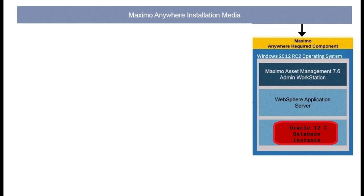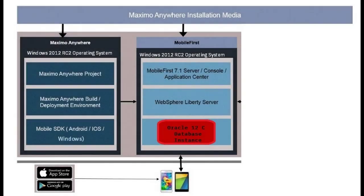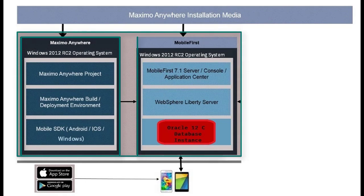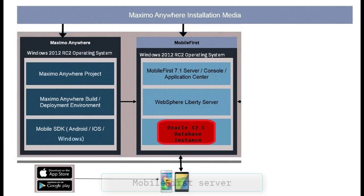A number of deployment topology options exist for installing Maximo Anywhere and IBM Mobile First Platform Server. In this instance, the topology is a single server deployment where Maximo Anywhere and Mobile First Server are installed on the same computer, which is designated as the Mobile First Server.